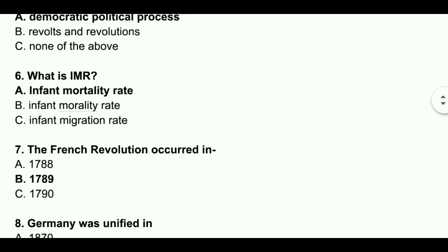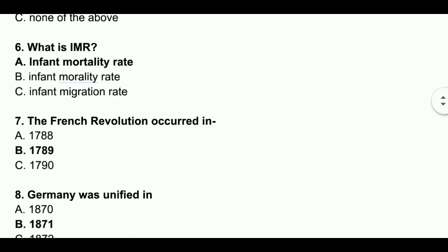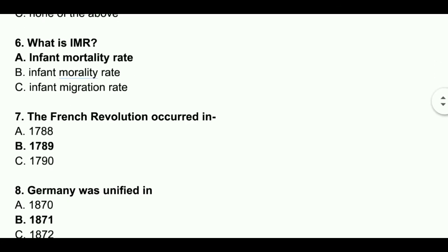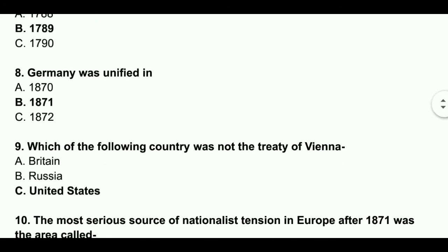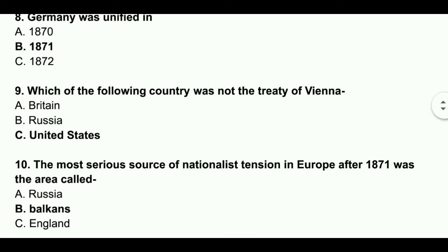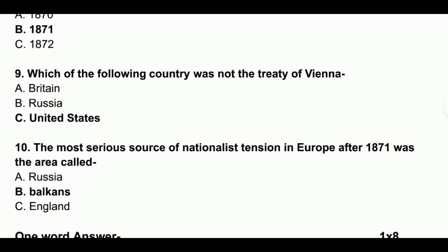The French Revolution occurred in 1789. Germany was unified in 1871. Which of the following countries was not part of the Treaty of Vienna? Answer: United States. The most serious source of nationalist tension in Europe after 1871 was the area called Balkans.